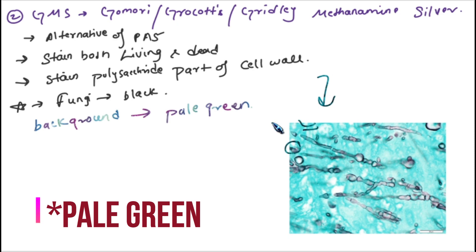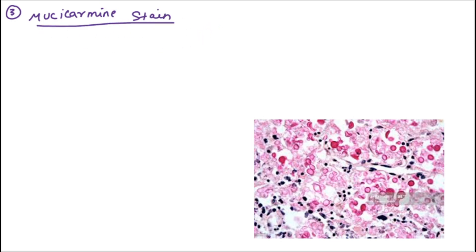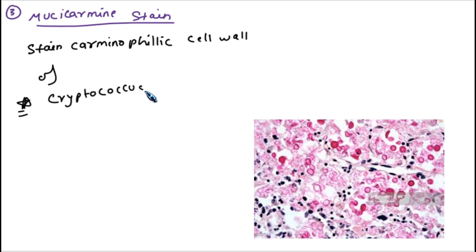The third histopathological stain is Mucicarmine stain. It stains the carminophilic cell wall of Cryptococcus and Rhinosporidium.